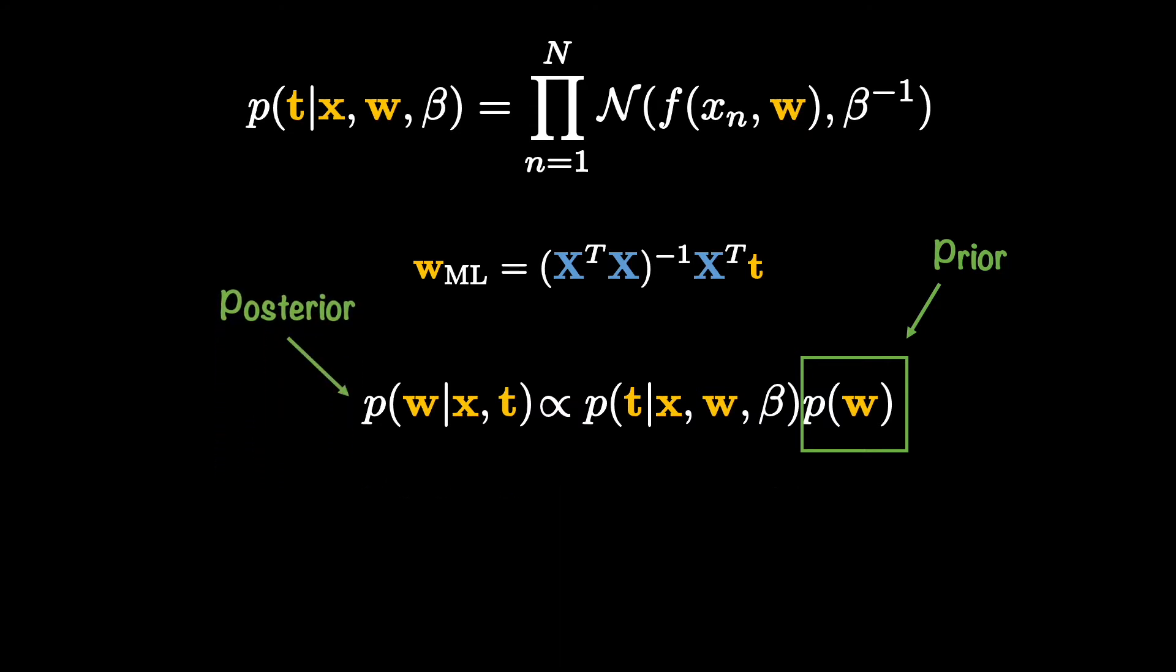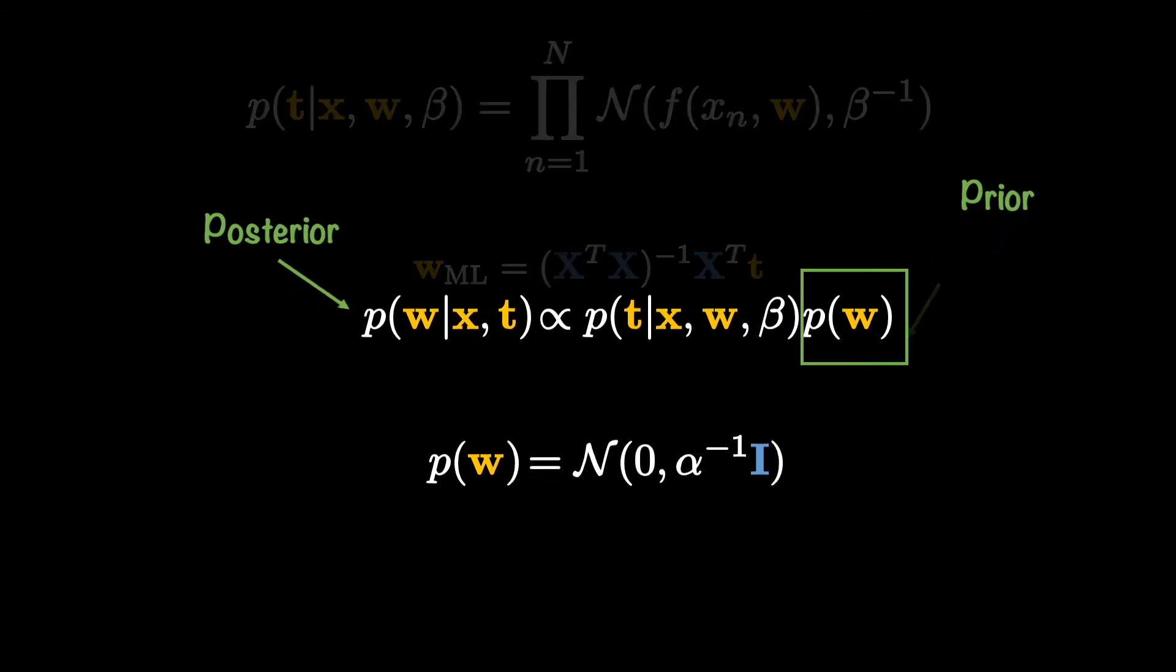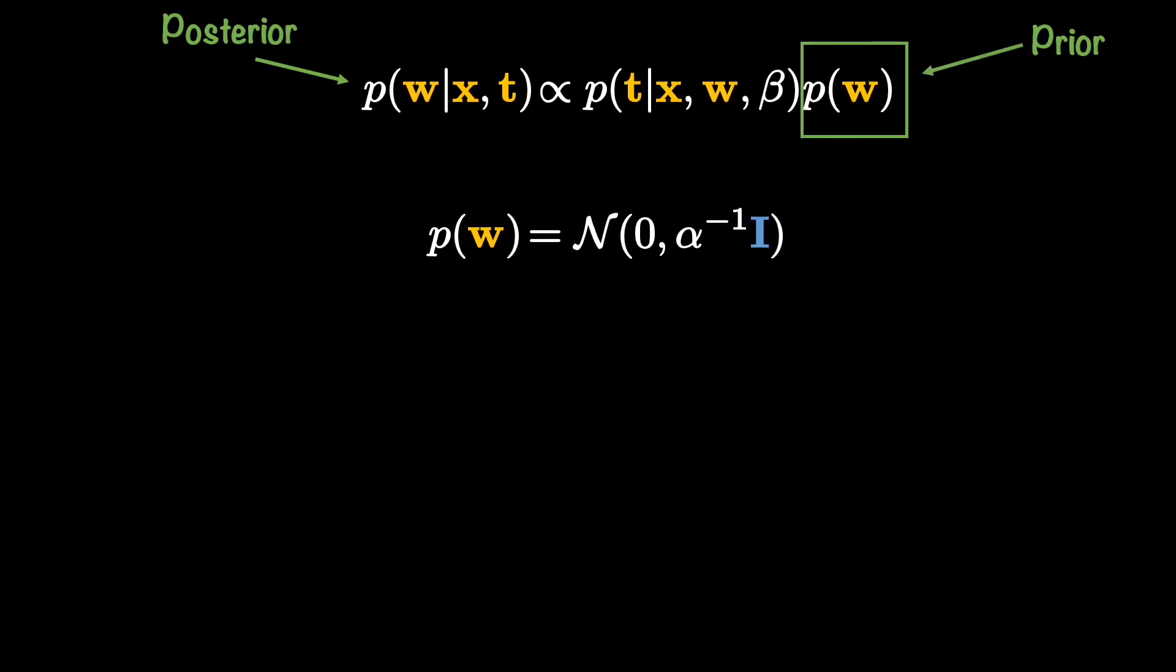That said, our first order of business here now is to express what we believe this prior is. For now, I am going to assume that the prior distribution is a normal distribution that has a mean of zero and has a diagonal covariance matrix.